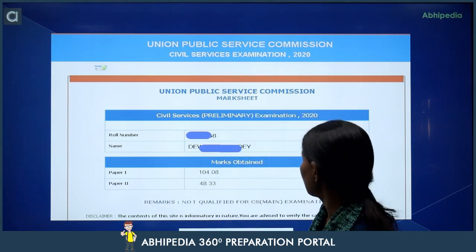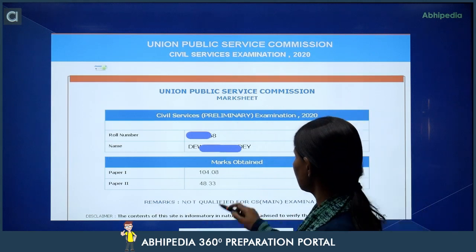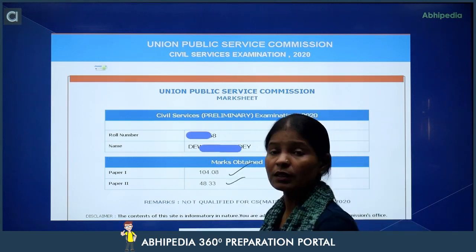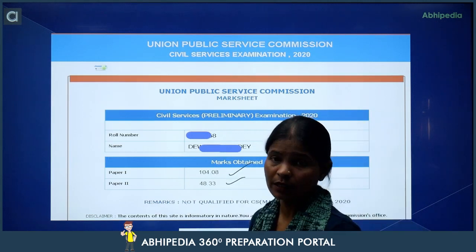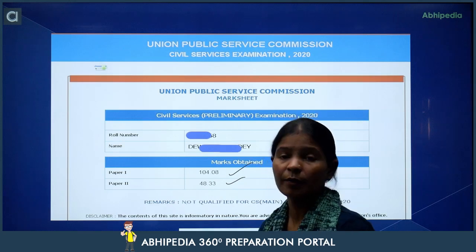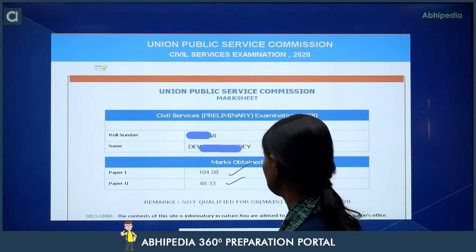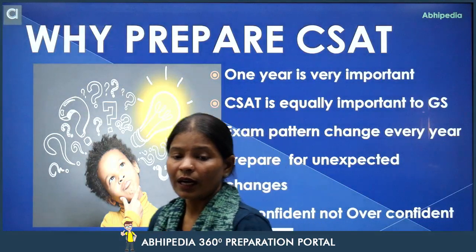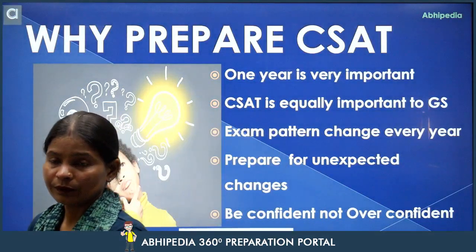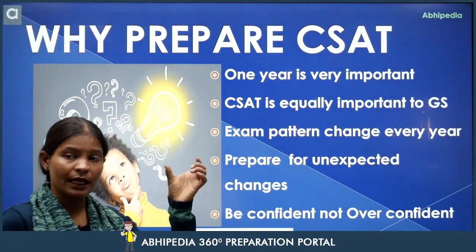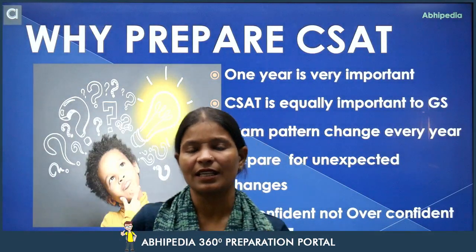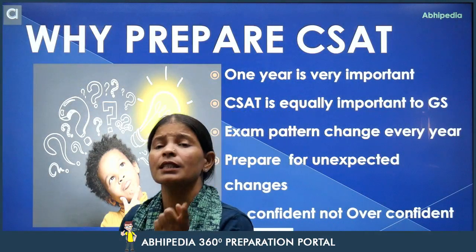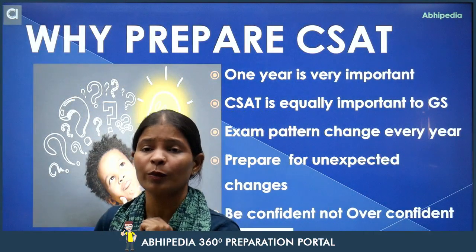Abh yahan pe dekho — 104 marks in GS paper 1, and in GS paper 2, this is 48 marks. Bilkul ignore kar diya yahan pe CSAT ke paper ko. Toh agar aap is tarah ki soch rakh rahe ho, toh ek baar dubara se aapko sochna hai ki why prepare for CSAT — CSAT ke liye mujhe kyun prepare karna hai.